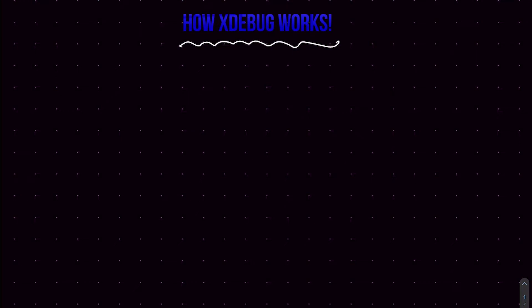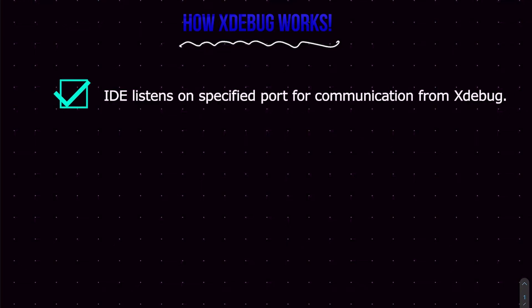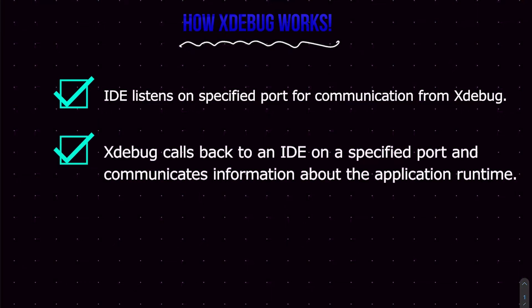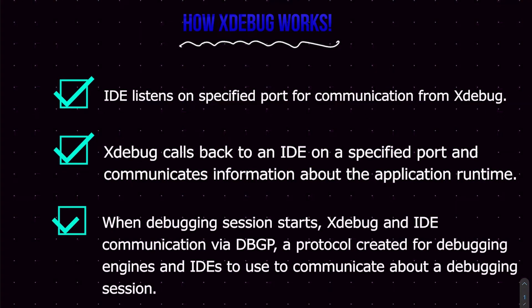This takes three main steps. The first step is that the IDE listens on a specified port for communication with Xdebug, waiting for incoming calls. The second step is that Xdebug, which is already installed on the PHP web server, calls back your IDE on a specific port and transfers information about the application runtime. At some point Xdebug communicates with the IDE on this specific port, then starts to send information about application runtime to the IDE once a debugging session starts.